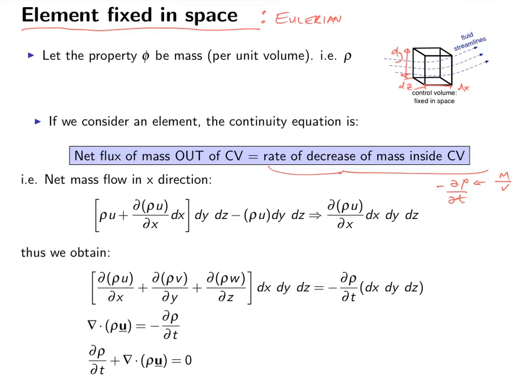So, as you can imagine, for incompressible flows, this is zero, because there's no decrease of mass inside the control volume. So all you need to look at is the balance of flux in and out of the control volume.